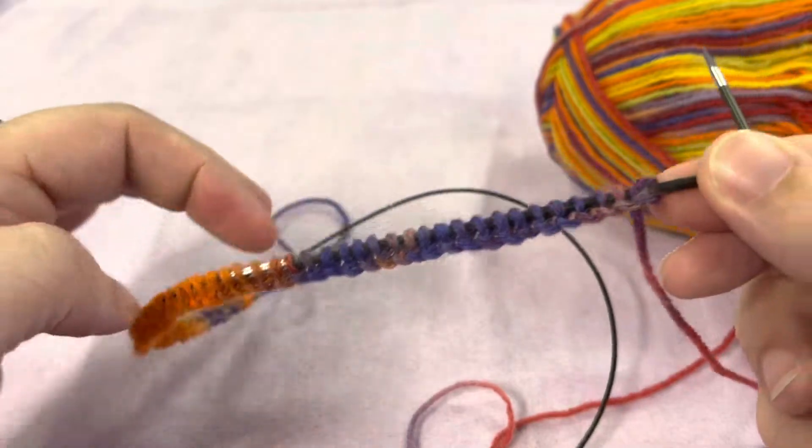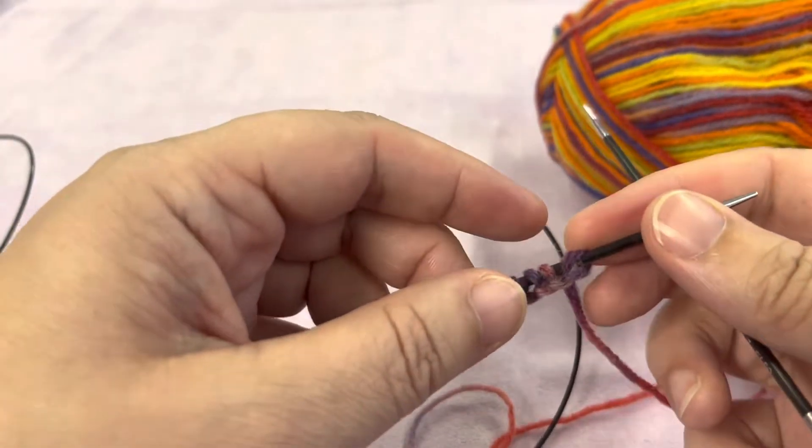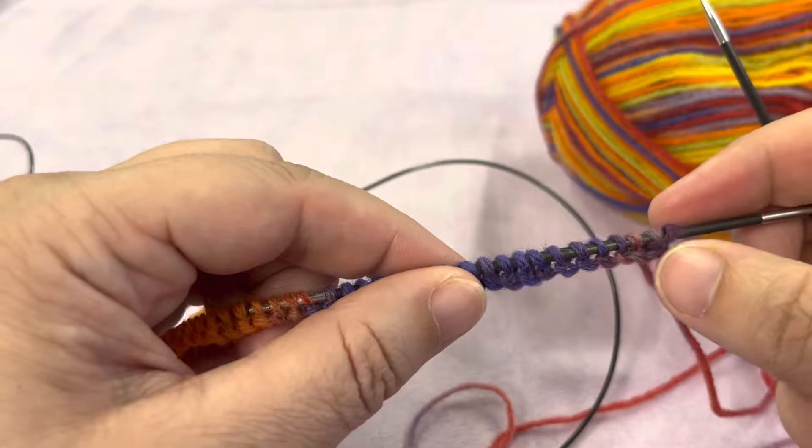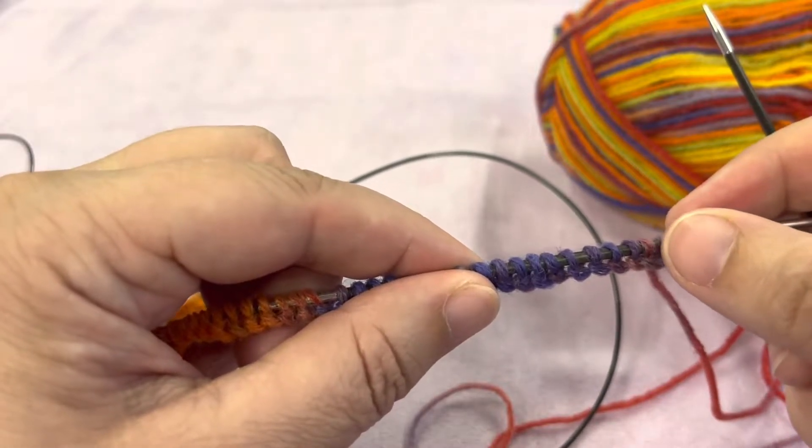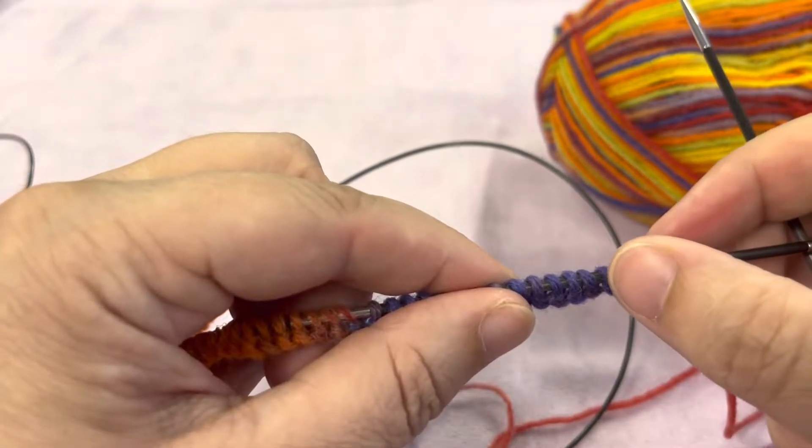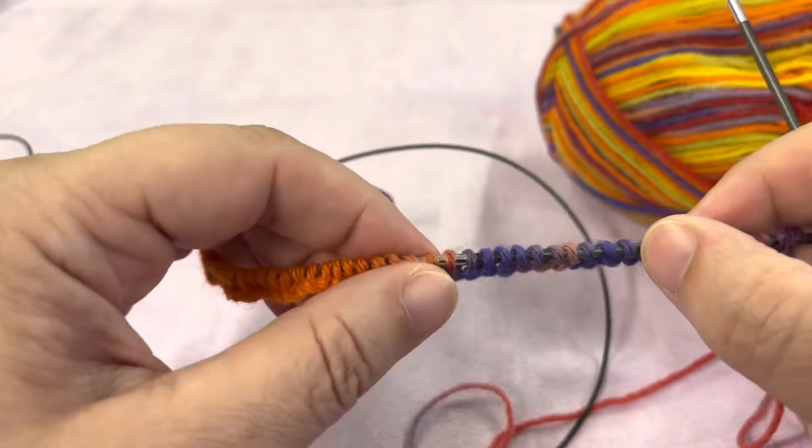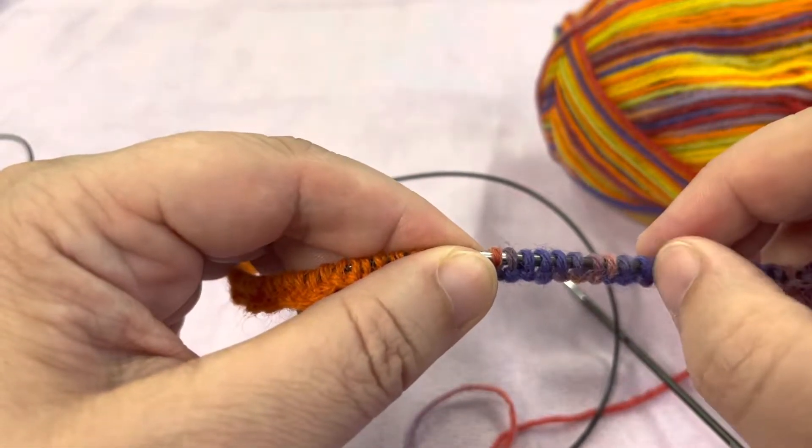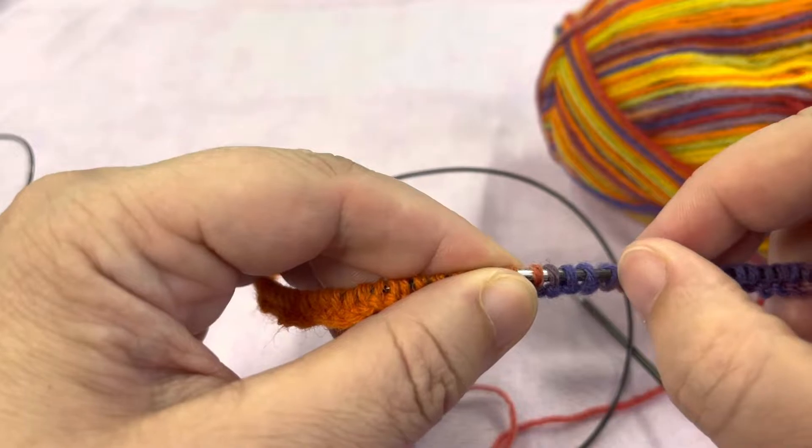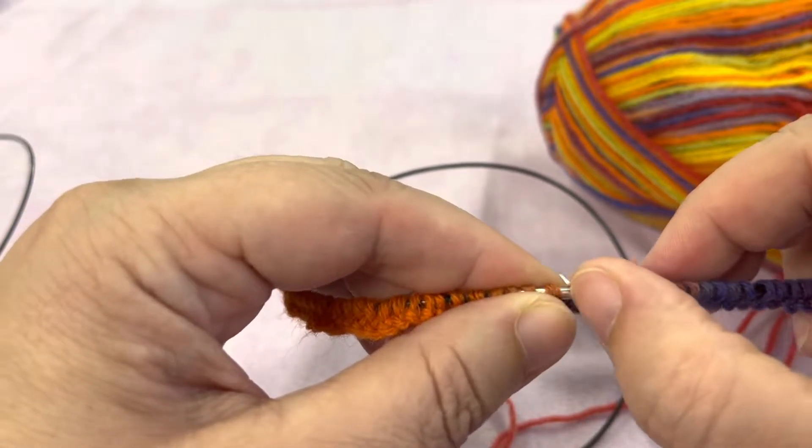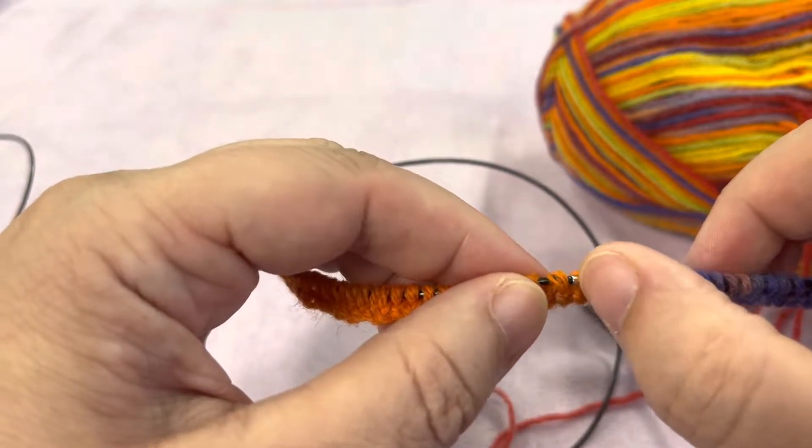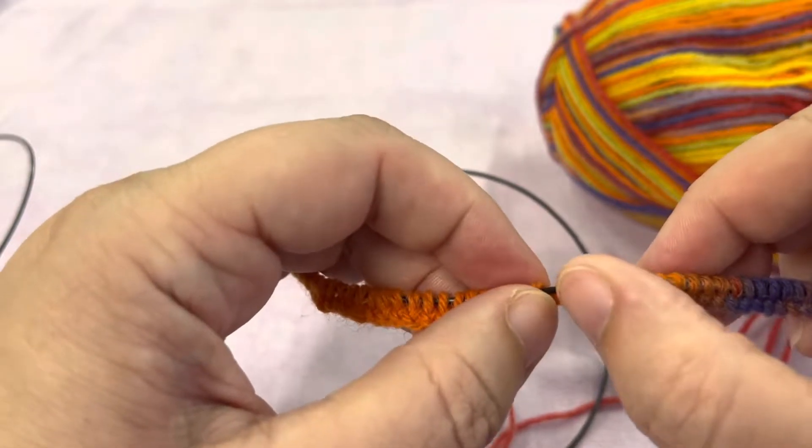Now we want to create our magic loop, so you're going to count down to 30 so that half of our stitches will be on one side. 1, 2, 3, 4, 5, 6, 7, 8, 9, 10, 11, 12, 13, 14, 15, 16, 17, 18, 19, 21, 22, 23, 24, 25, 26, 27, 28, 29, 30.